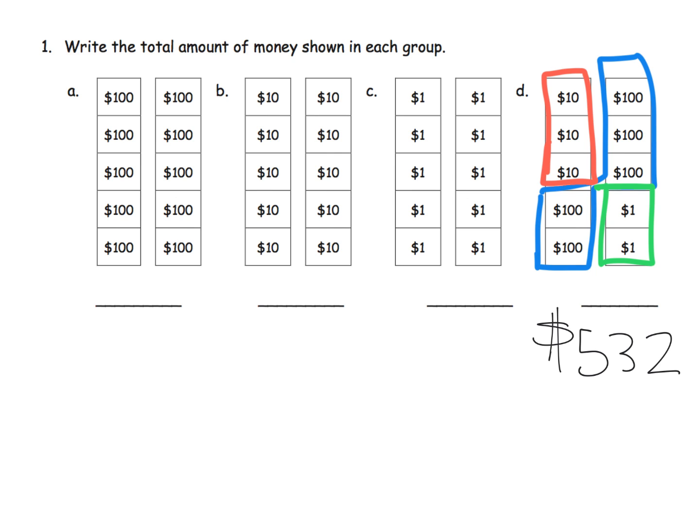I would grab all of our like denominations—find all the hundreds, add them up; find all the tens, add them up; find all the ones, add them up—and that gives us a nice, quick, efficient way of counting the total.